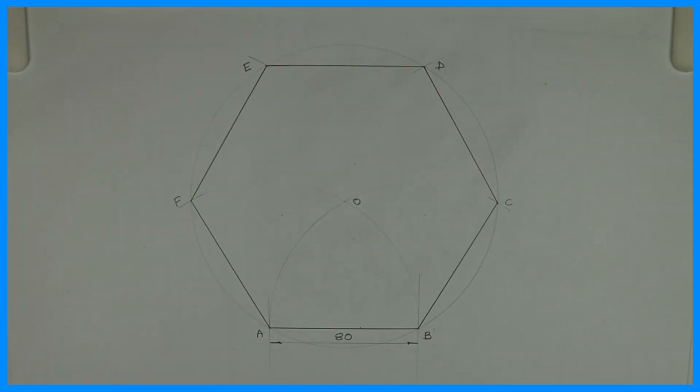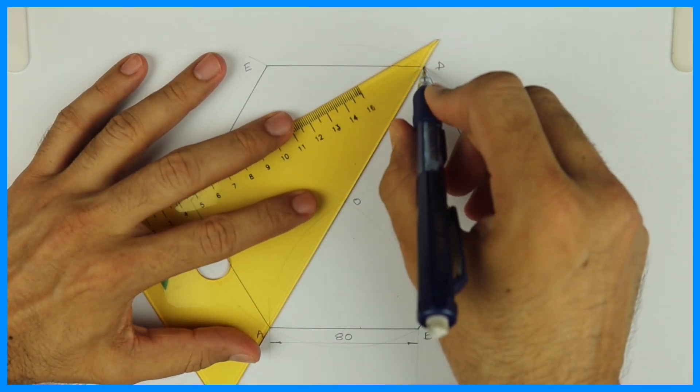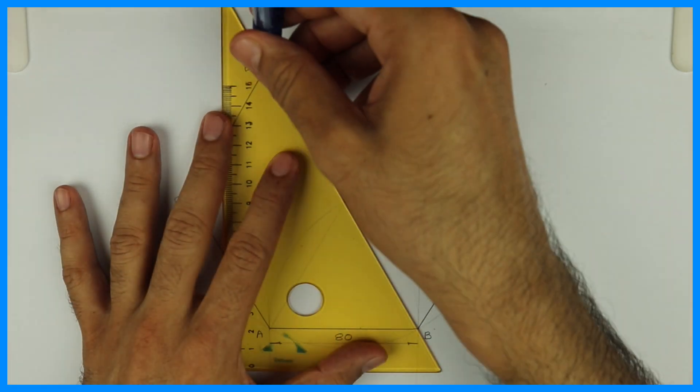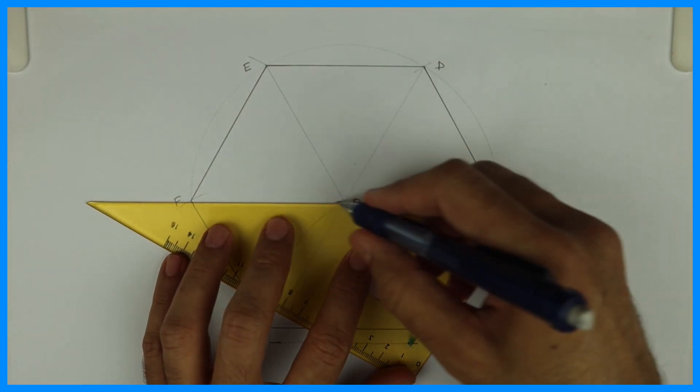Now after drawing this hexagon, we'll divide this into six equal parts by joining diagonals. See this. We'll join A to D, B to E, and C to F. So if you see we got six triangles.